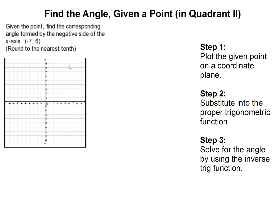How to find the angle when given a point that's in quadrant 2. I'll read the problem for you. It says: given the point, find the corresponding angle formed by the negative side of the x-axis.